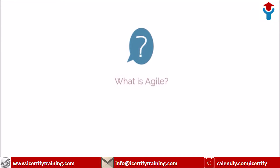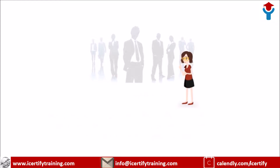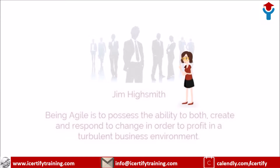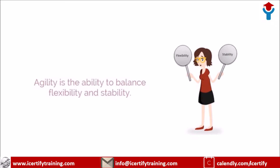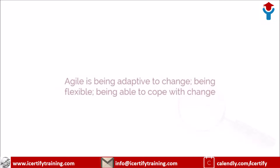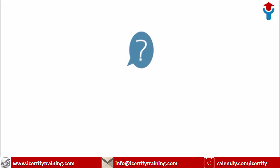According to popular Agile guru Jim Highsmith, being Agile is to possess the ability to both create and respond to change in order to profit in a turbulent business environment. Agility is the ability to balance flexibility and stability. Agile is being adaptive to change, being flexible, and being able to cope with change.